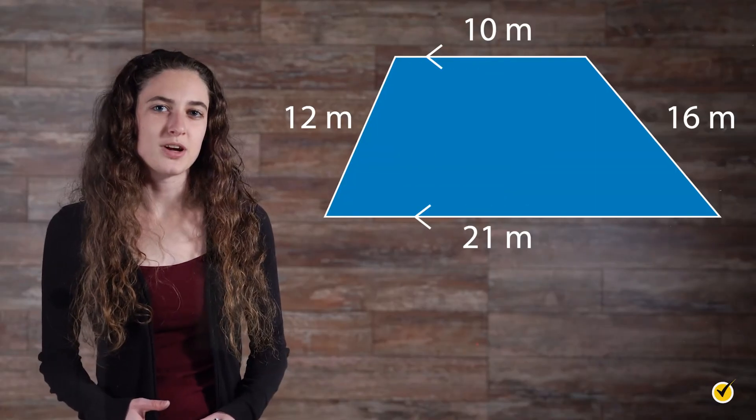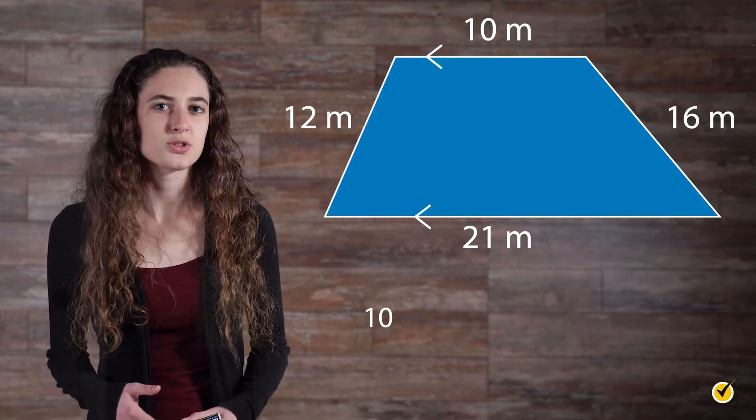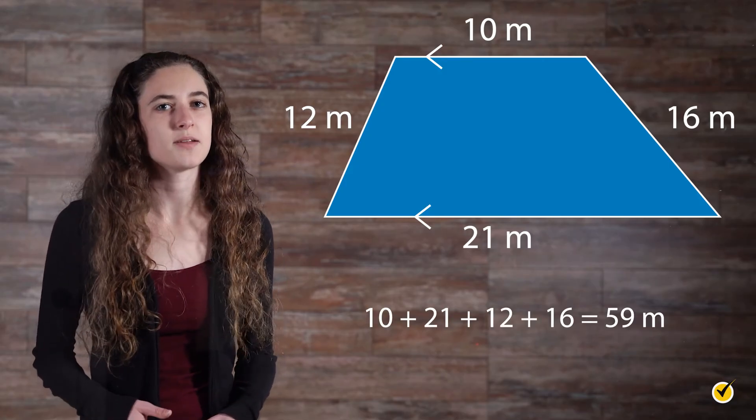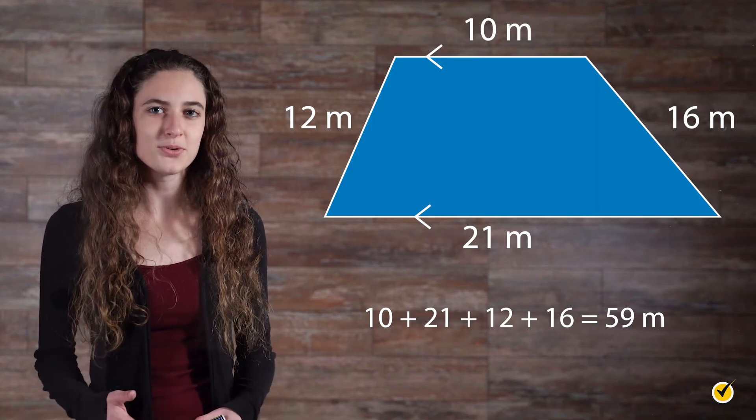Let's go ahead and find the perimeter of this trapezoid. 10 plus 21 plus 12 plus 16 equals 59 meters. That's all there is to it.